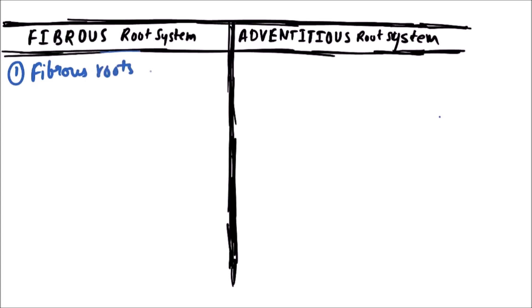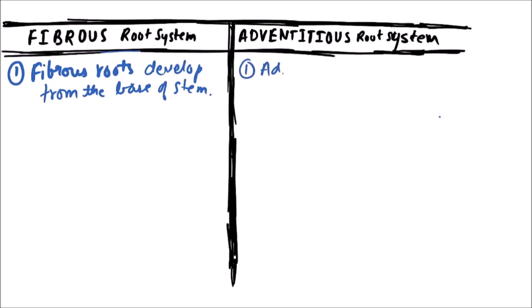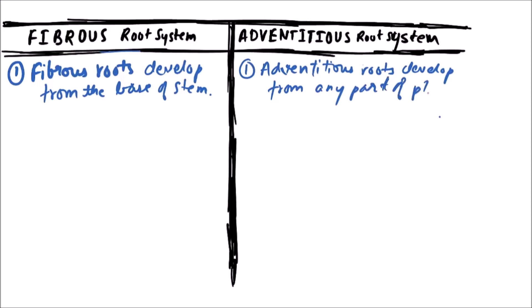Fibrous roots develop from the base of the stem, while adventitious roots develop from any part of the plant other than the radicle.